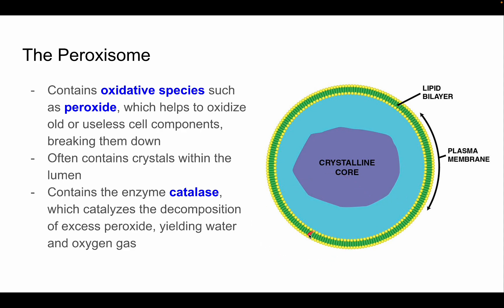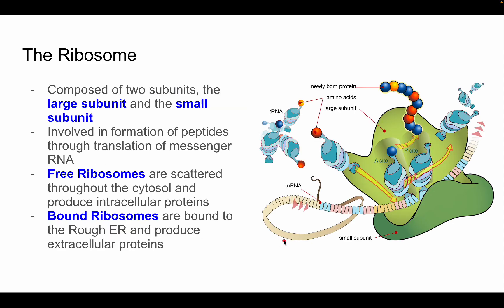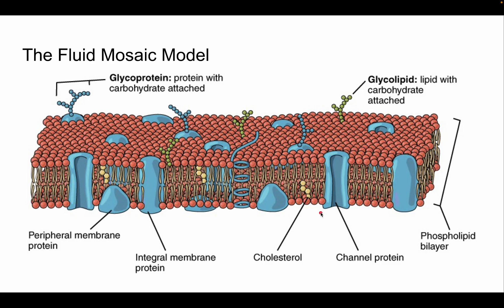That's why when you pour hydrogen peroxide on blood it bubbles — it's releasing oxygen gas as the peroxisomes' catalase acts. Finally, the ribosome is composed of two subunits: the large subunit and the small subunit. It's involved in the formation of peptides through translation of messenger RNA. Free ribosomes scattered throughout the cytosol produce proteins for the cell itself, while ribosomes bound to the rough ER produce extracellular proteins secreted through exocytosis.